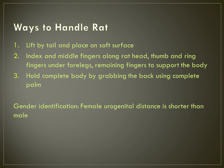Ways to handle a rat: One way is to lift by the tail and place it on a soft surface — if it is a rough surface the rat will become agitated. The second way is to place the index and middle finger along the rat's head, thumb and ring finger under the forelegs, and remaining fingers to support the body. The third way is to hold the complete body by grabbing the back using the complete palm.